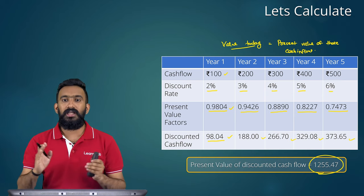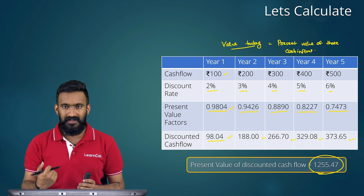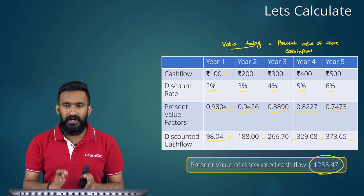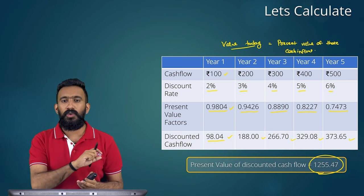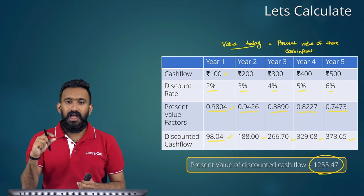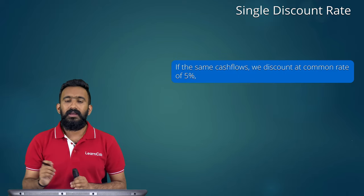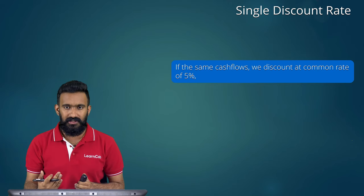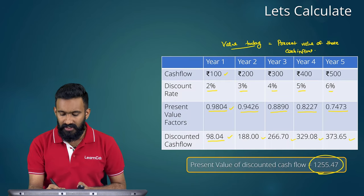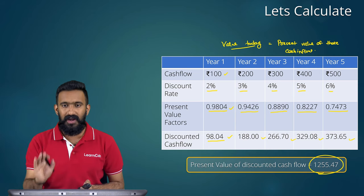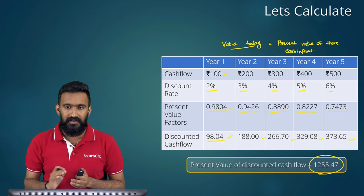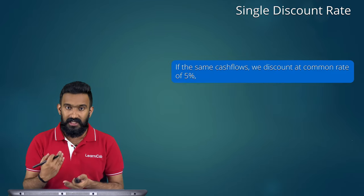We can also calculate an equivalent single discount rate. If we discount those same cash flows (100, 200, 300, 400, 500) at a uniform rate of 5% instead of the varying rates of 2% to 6%, we still get approximately 1,255.47 — very close. So in practice we often use a single discount rate, even though theoretically different years might have different rates.